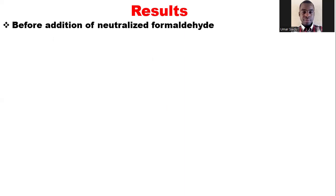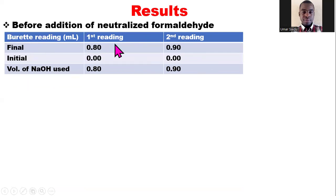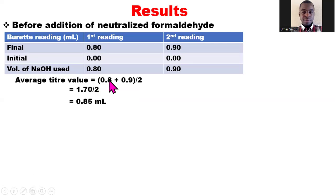For the results, before addition of neutralized formaldehyde, you tabulate the burette readings. Starting from zero, the final volumes for the first and second readings are 0.8 mL and 0.9 mL respectively. The volumes of sodium hydroxide used are 0.8 and 0.9 mL. The average titer value is (0.8 + 0.9) / 2 = 0.85 mL before the addition of neutralized formaldehyde.